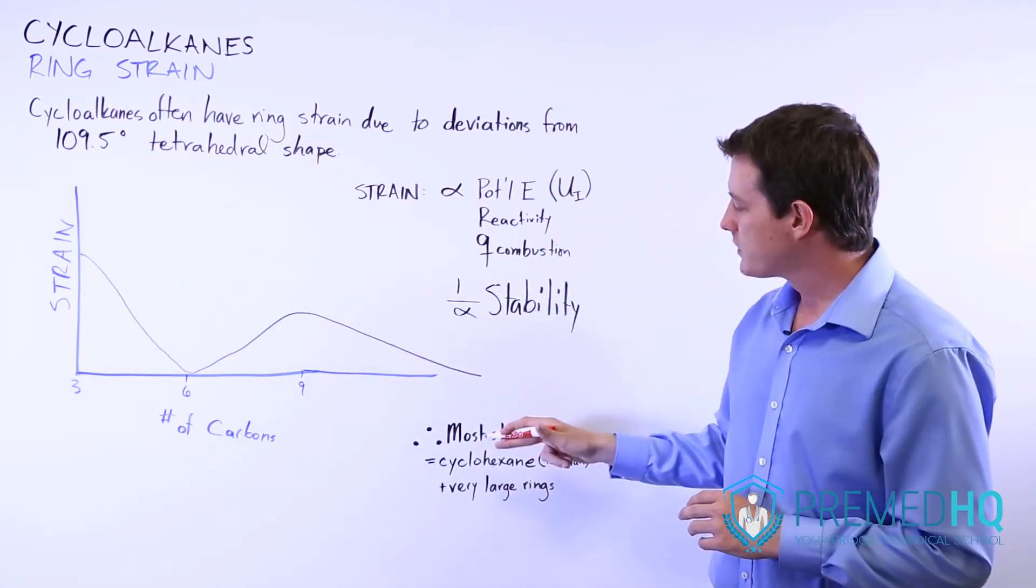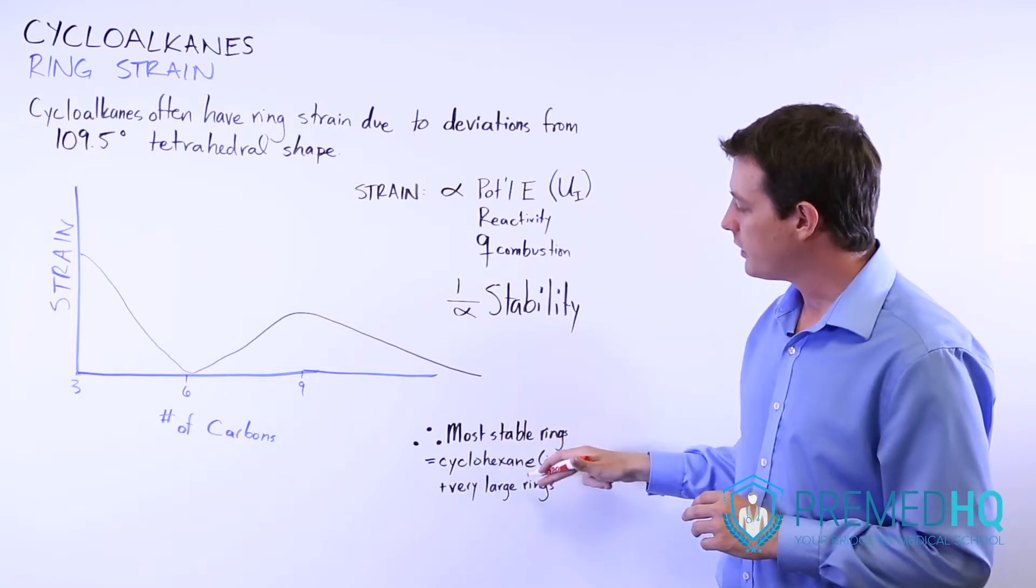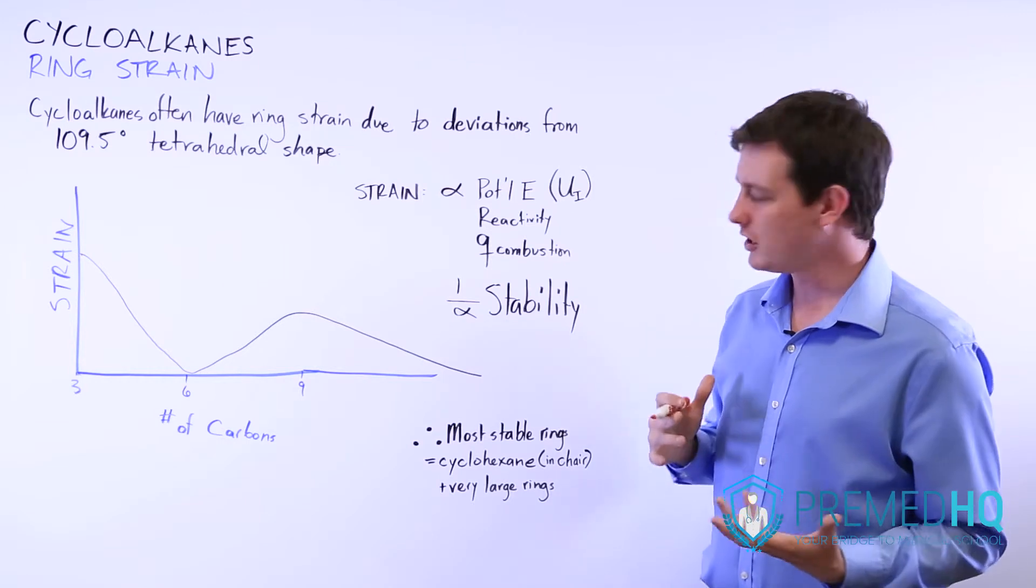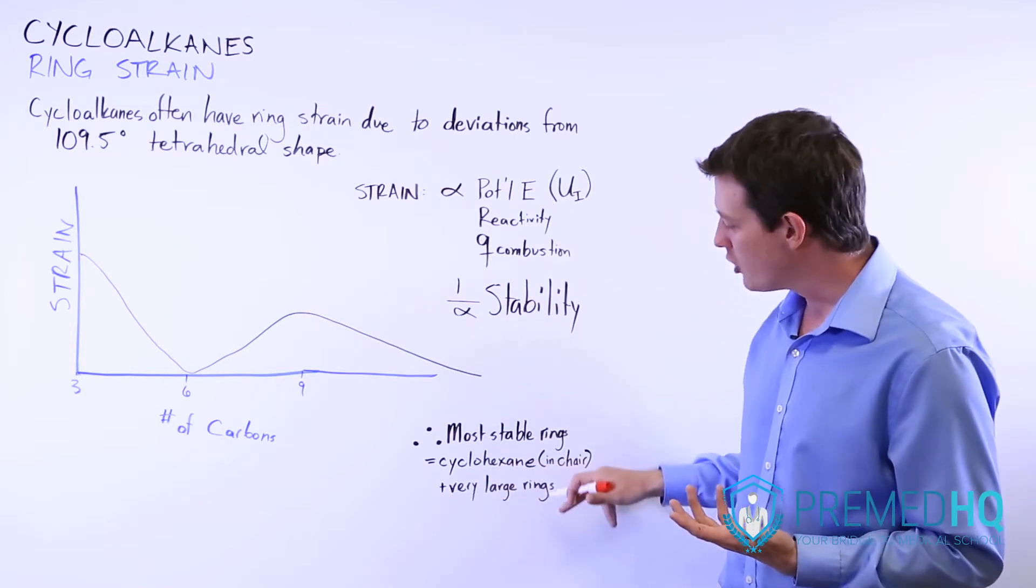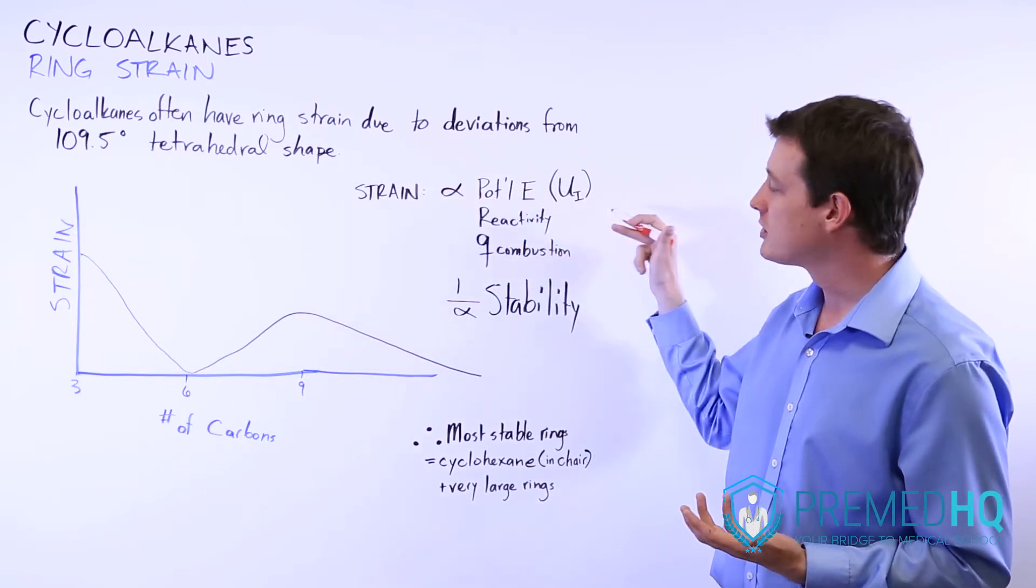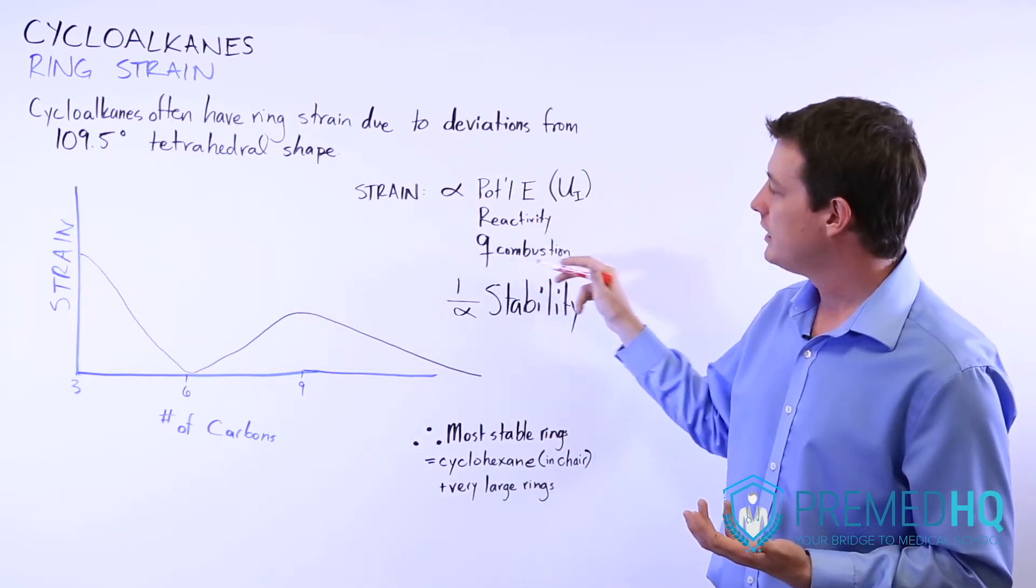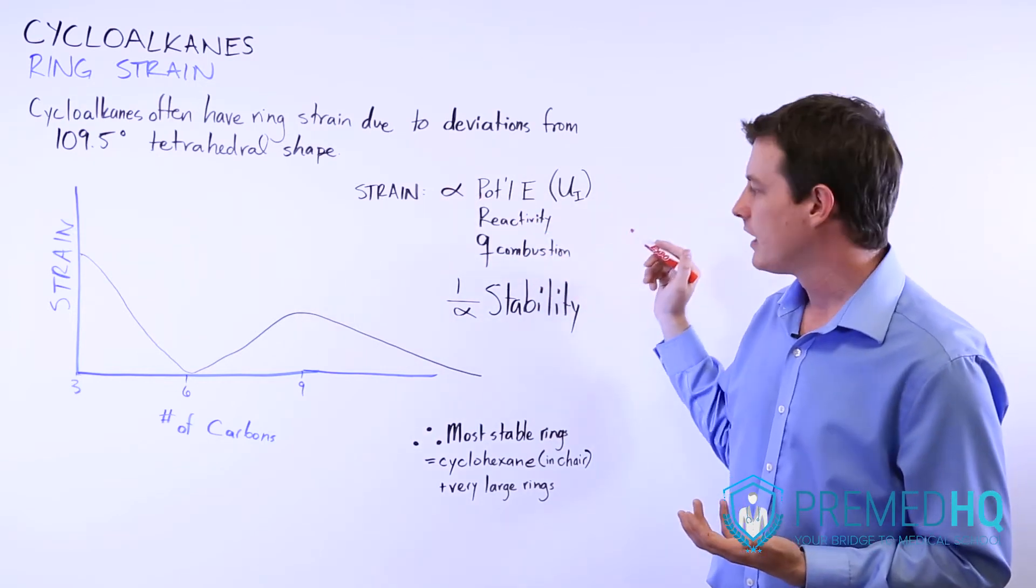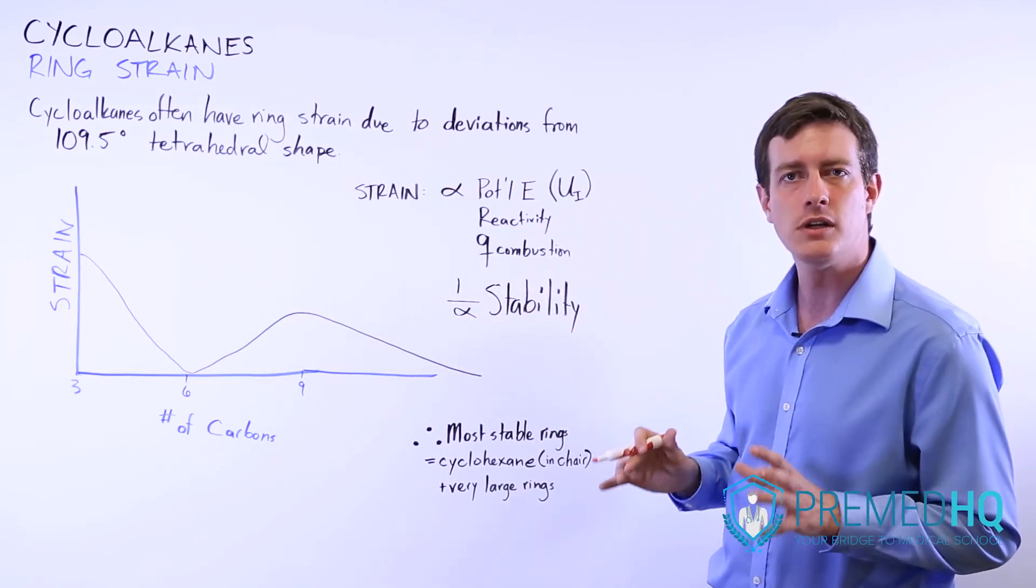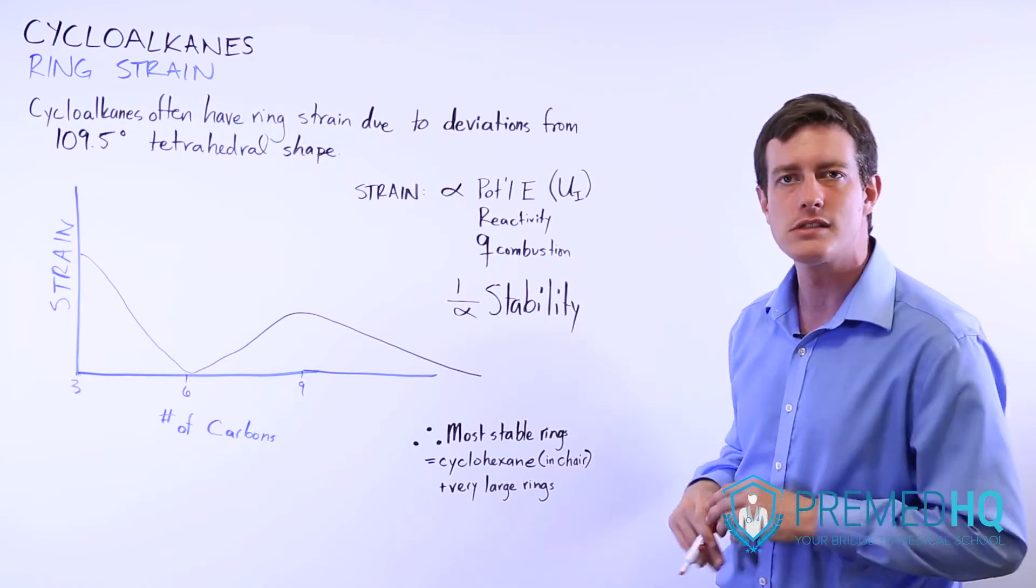And so the most stable rings that you'll encounter are cyclohexane, particularly within its chair conformation, which we'll cover in a moment, and very large rings. And realize that ring strain is proportional to potential energy, reactivity, and the heat of combustion, and it's inversely proportional to stability. And so now we'll move into cyclohexane and its various conformations.